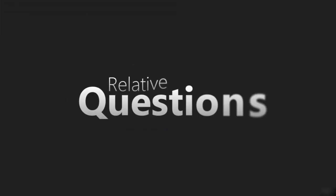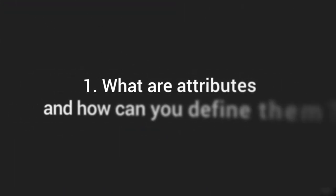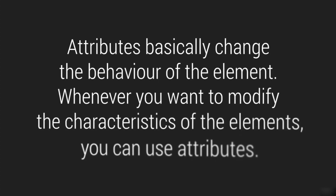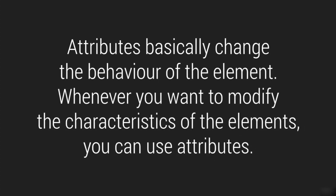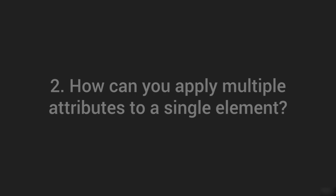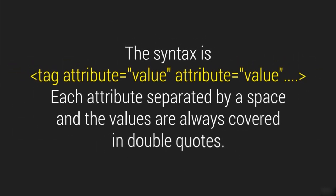Let's talk about relative questions. The first question is: what are attributes and how can you define them? Attributes basically change the behavior of the element — whenever you want to modify the characteristics of an element, you can use attributes. The second question is: how can you apply multiple attributes to a single element? You have the tag name, then you keep writing attributes, each separated by a space. The values are always covered in double quotes. Do make sure you follow these standards.